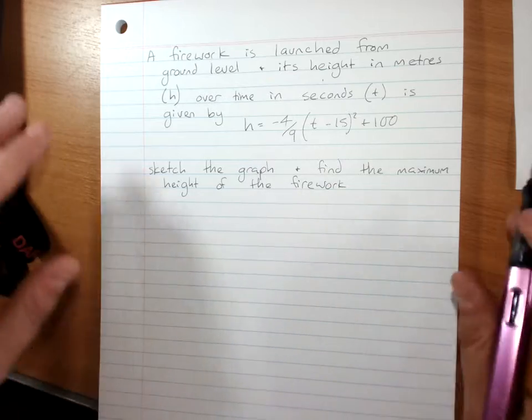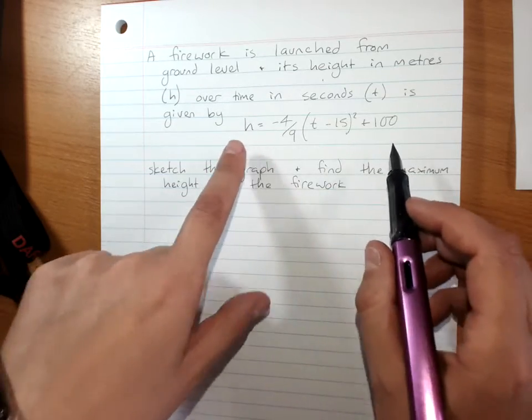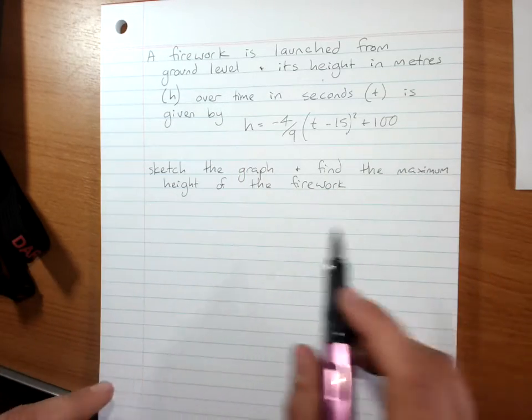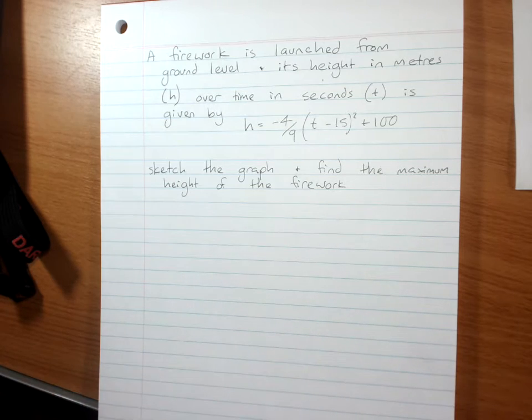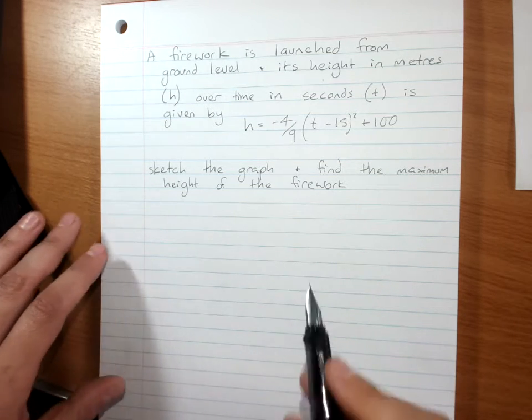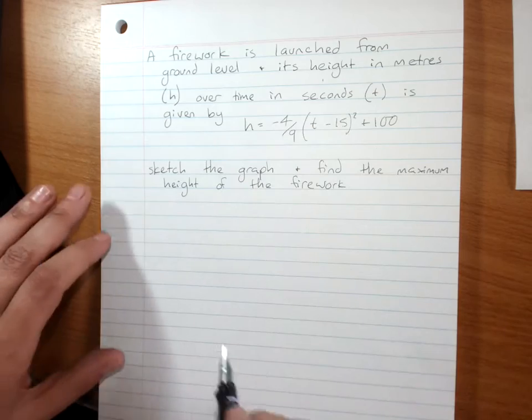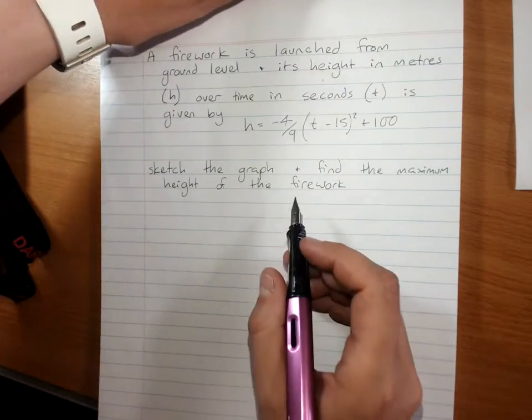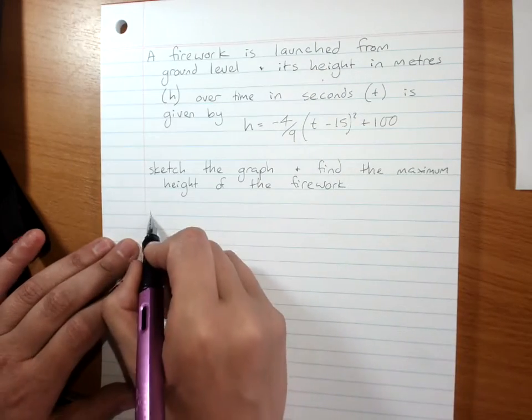What I want to cover with this example, which is why I chose the turning point, is one way of getting the x-intercepts when you have the turning point form. So the turning point is easy.